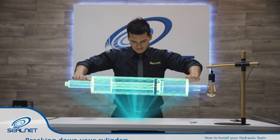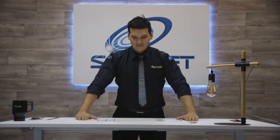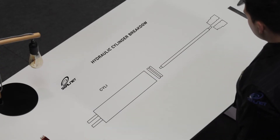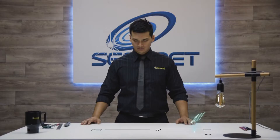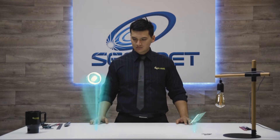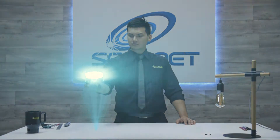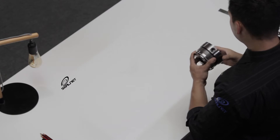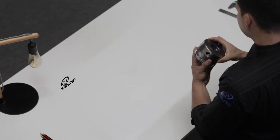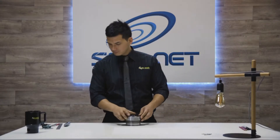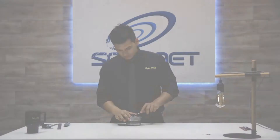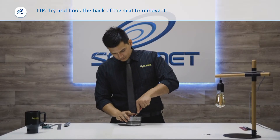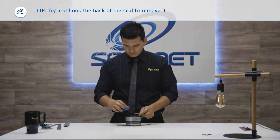There are four main components that make up a hydraulic cylinder: the gland, rod, piston, and cylinder barrel. Let's begin with the gland. Firstly, inspect the gland for any damage. Now it's time to remove the used seals. Using a hook and pick tool, pry the seals from their housing and set aside.